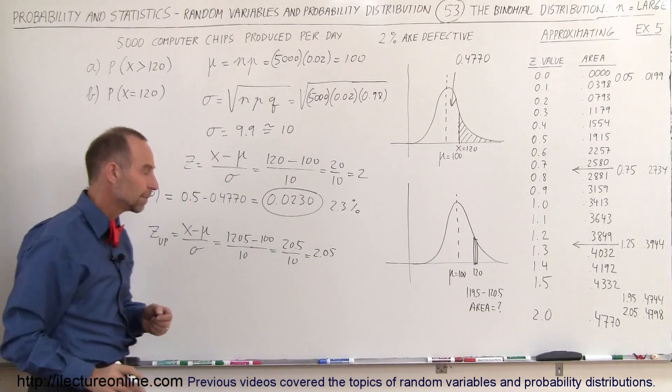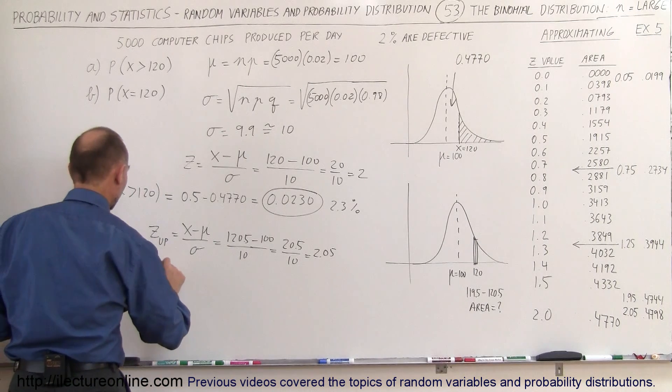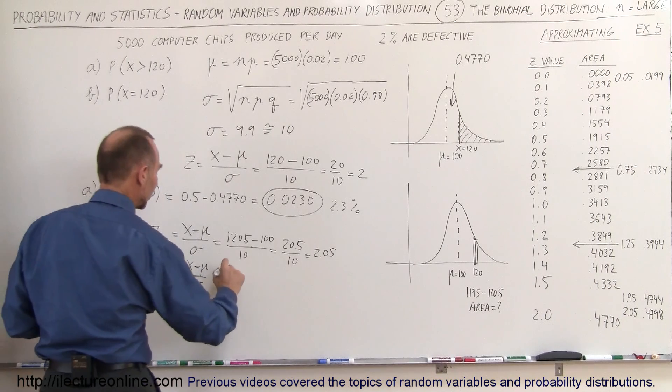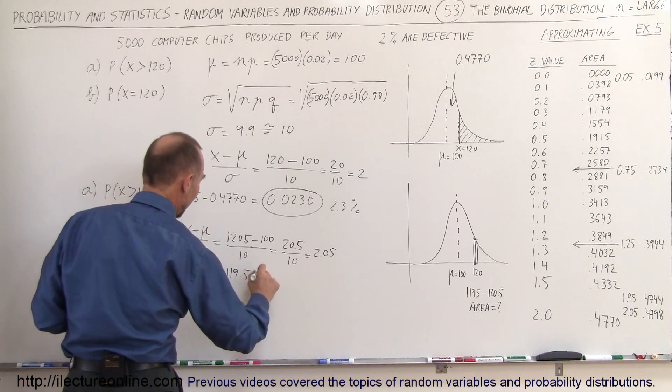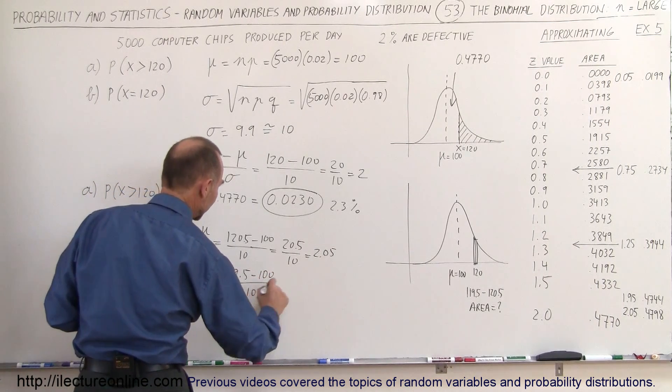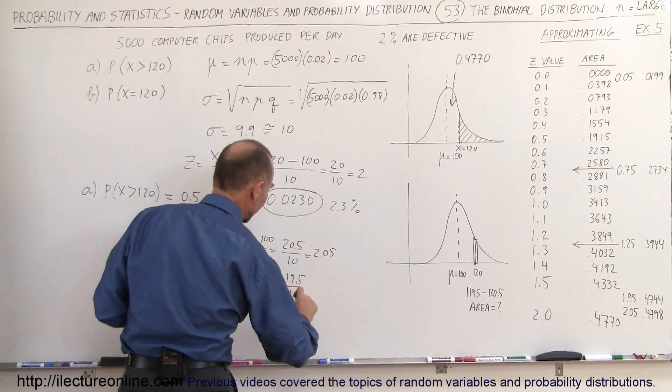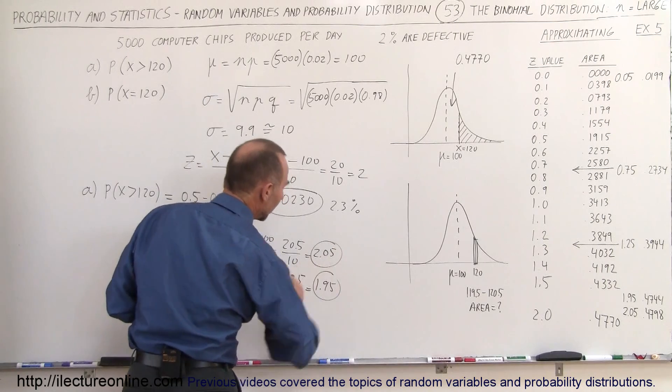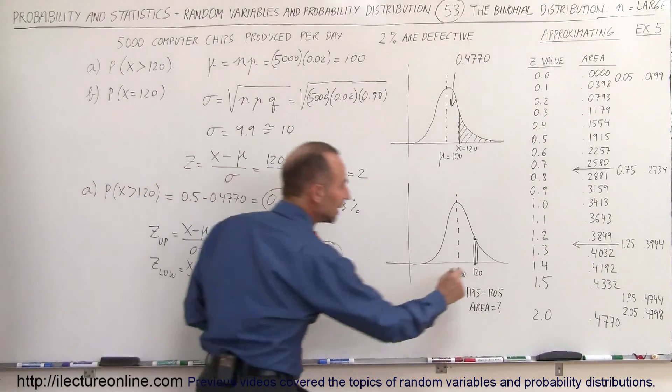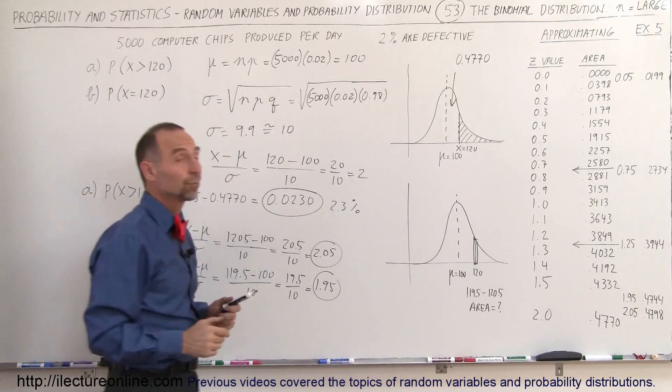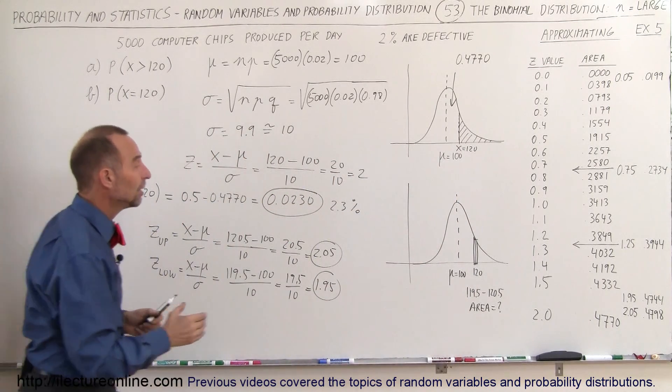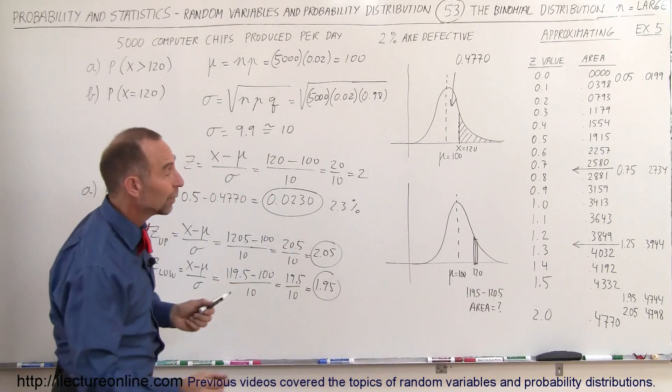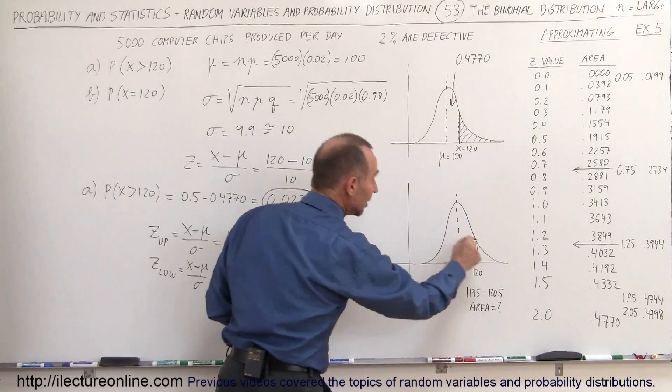We find the lower limit for Z, which is equal to X minus mu over sigma, which is 119.5 minus 100 divided by 10, which is 19.5 divided by 10, which is equal to 1.95. So here we have the two limiting Z values. We need to find the area of the upper limit and subtract the area of the lower limit to get the difference, which is the area underneath the curve.